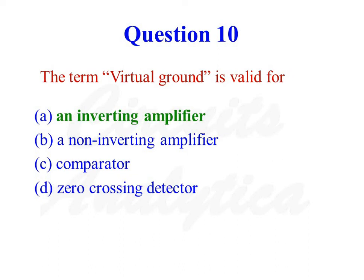The term virtual ground is valid for an inverting amplifier. In the case of an inverting amplifier, the non-inverting input is connected to ground, so voltage at the non-inverting input is equal to 0. If V1 is the voltage at the non-inverting input and V2 is the voltage at the inverting input, then V1 minus V2 equals VID. For an ideal operational amplifier, VID is equal to 0. Since V1 is equal to 0, then 0 minus V2 equals 0, meaning V2 is also equal to 0. So the voltage at the inverting input is equal to 0. The inverting input exists at ground potential but is not actually connected to ground, so the inverting input is said to be existing at virtual ground.